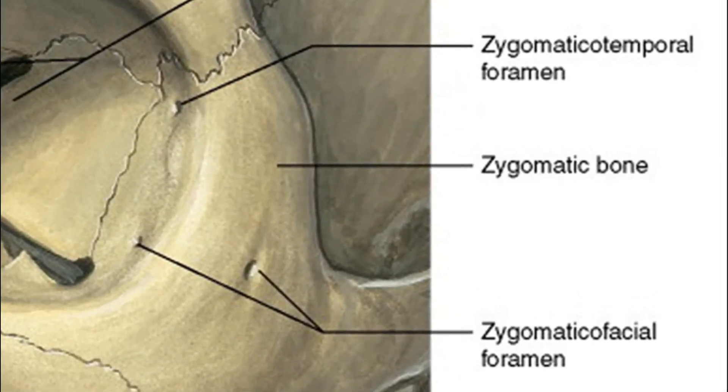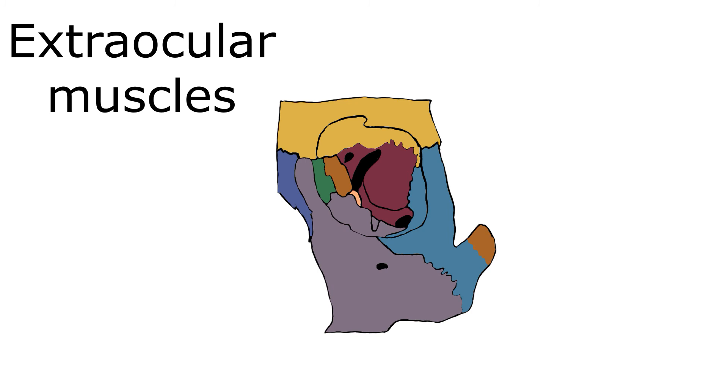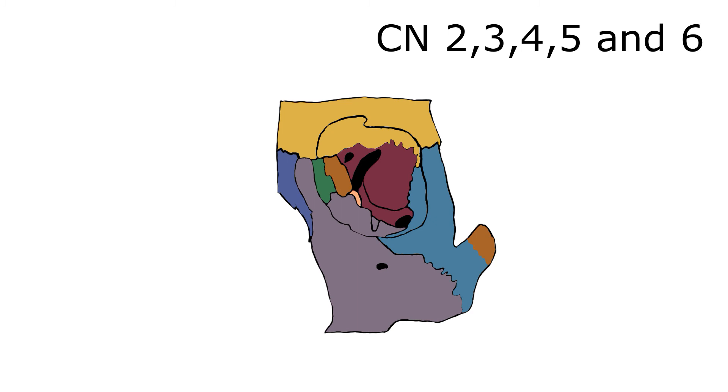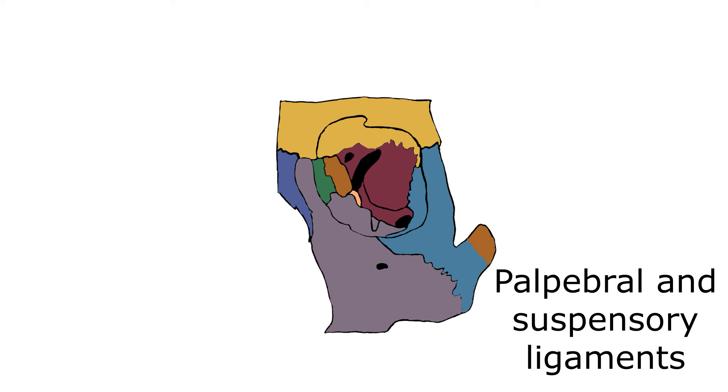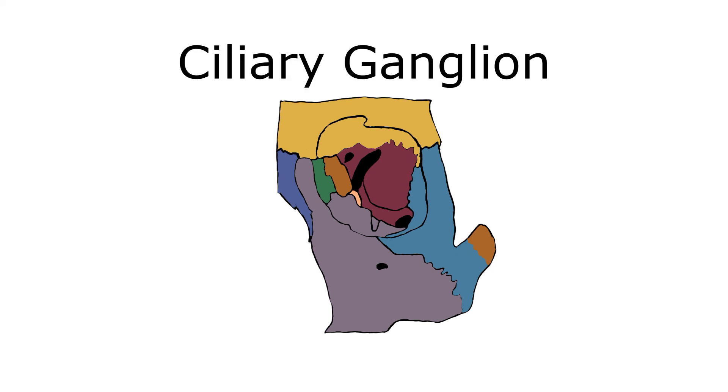Okay, now the contents. You've got the orbital and the retrobulbar fascia, you've got the extraocular muscles of the eye, six of those, you've got cranial nerves II, III, IV, V, and VI, you've got blood vessels, the lacrimal gland with its sac, the lacrimal duct, you've got the eyelids, the ligaments, palpebral and suspensory ligaments, you've got the ciliary ganglion and short ciliary nerves as well.